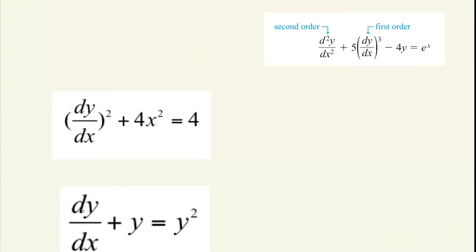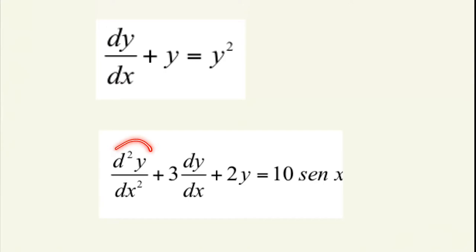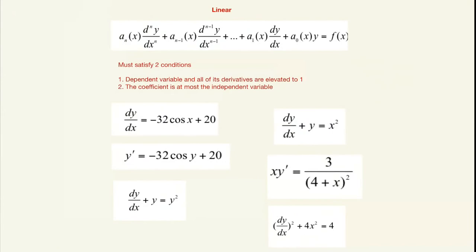Let's do some examples. This first example is considered a first order because the highest derivative is elevated to one — it's the highest derivative, not the function, keep that in mind. Here the highest derivative is one. In the third example, the highest derivative is of order two.